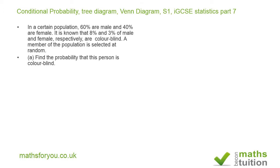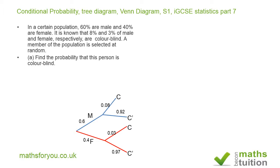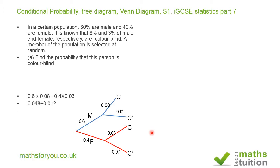From the tree diagram, this person can either be male and colorblind, or female and colorblind. So the probability becomes 0.6 times 0.08 for male, plus 0.4 times 0.03 for female. That gives us 0.048 plus 0.012. When you add those up you get 0.06, and that's your answer for Part A — you get three marks.